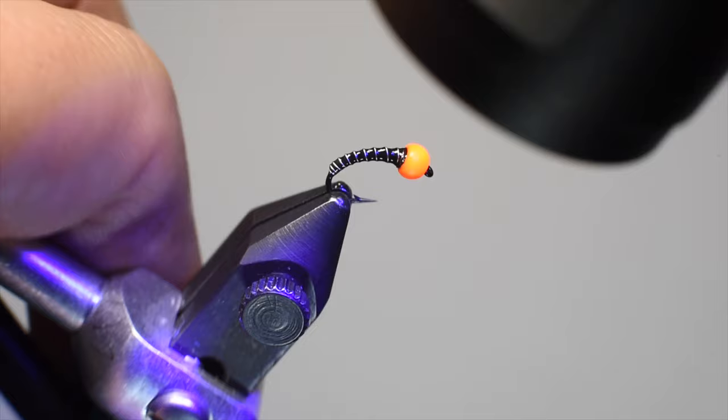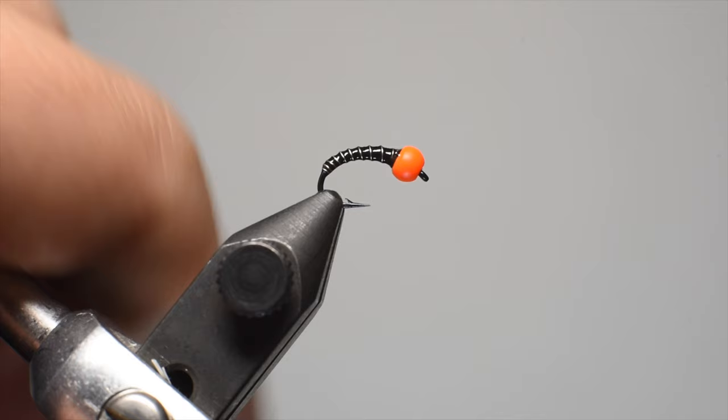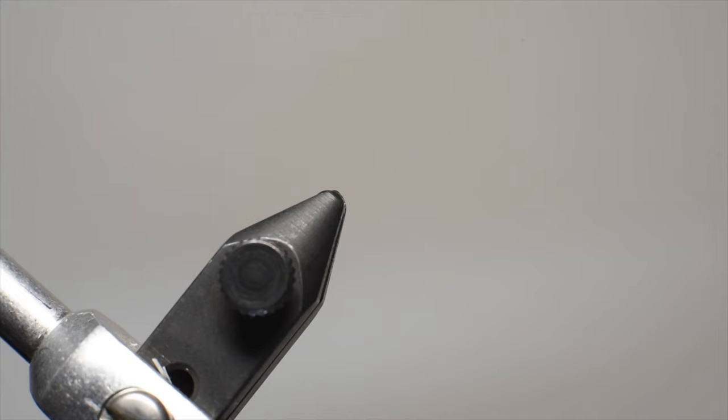And that's it, pretty simple pattern. You can tie this up in a bunch of different colors. Thread comes in a million colors, tungsten comes in a million colors, and wire comes in a million colors. So the combinations are endless. Tie some up, fish them, they catch fish.